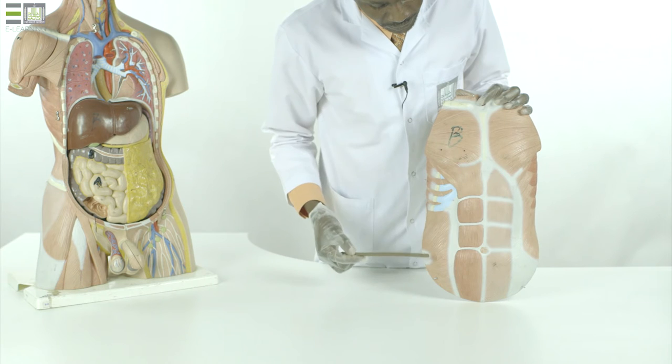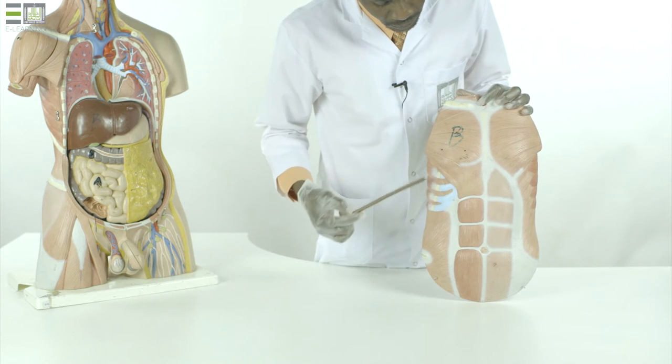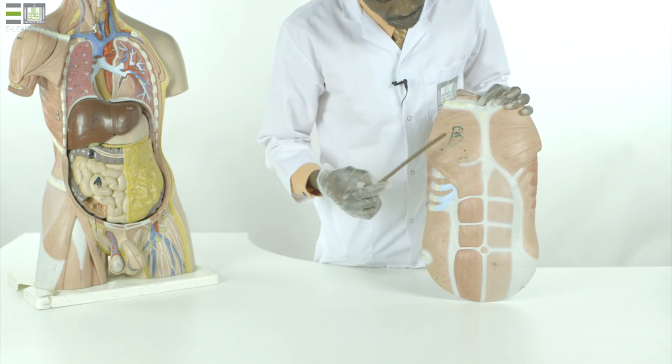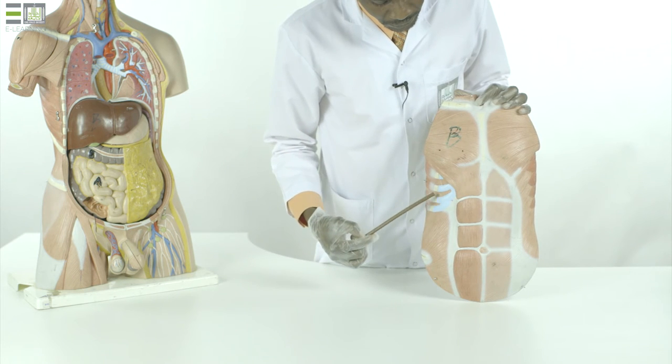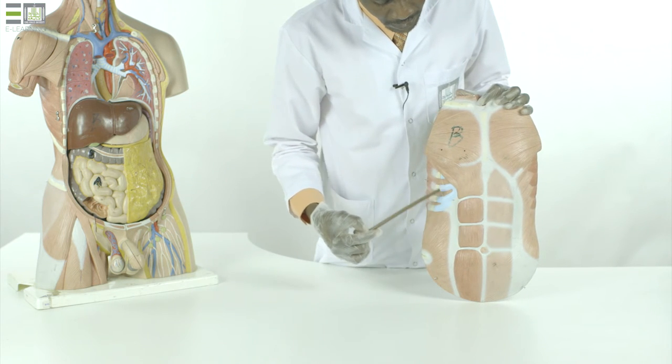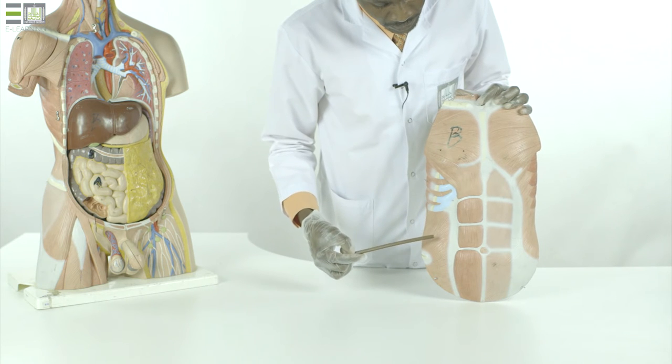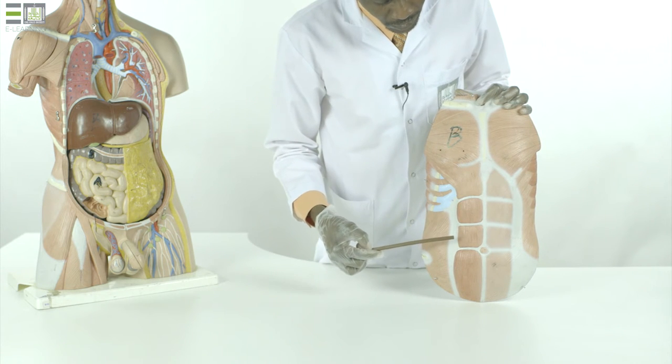The skin of the anterior abdominal wall is supplied by thoracic spinal nerves, the lower five thoracic spinal nerves, in addition to the first lumbar nerve.